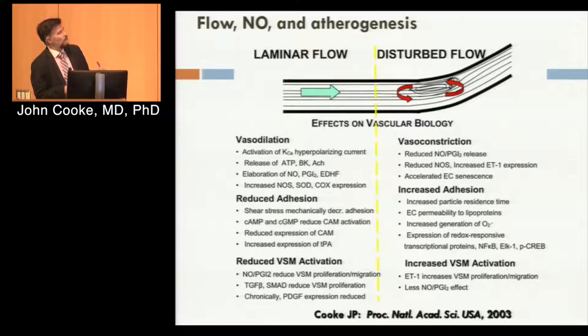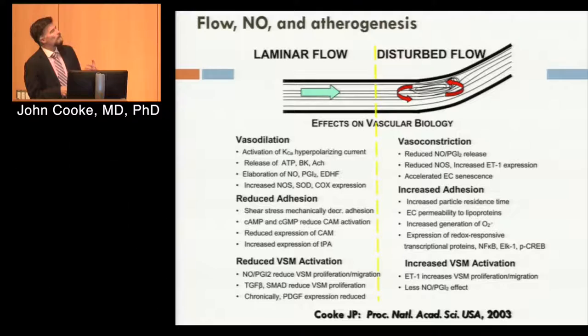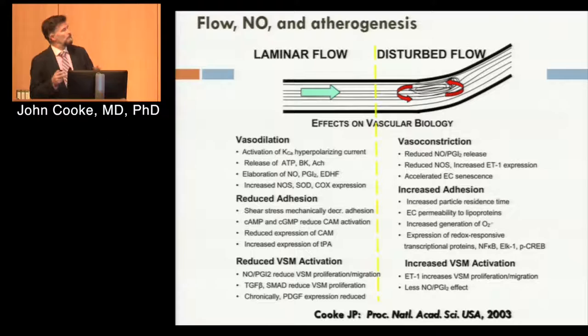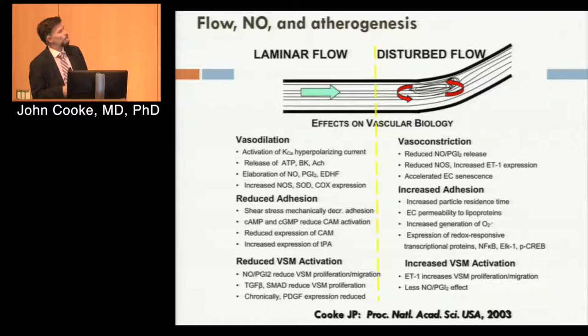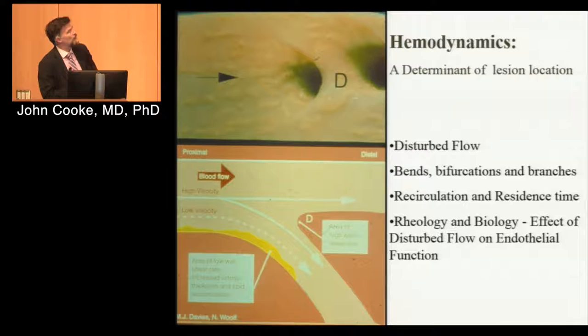At bends, branches, and bifurcations, you have disturbed flow with eddies that allow for recirculation and allow lipoprotein particles and leukocytes to have more contact with the vessel wall. In addition, there are biological changes in the endothelium that make it atheroprone. Even before there's any evidence of atherosclerosis in a normal-cholesterolemic animal with normal blood sugar, these areas are already atheroprone — expressing less nitric oxide, more oxygen-derived free radicals, adhesion molecules, and chemokines. This is where we see lesions develop in our patients: at the bends, branches, and bifurcations of blood vessels.